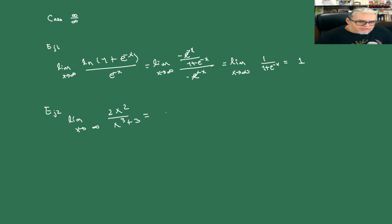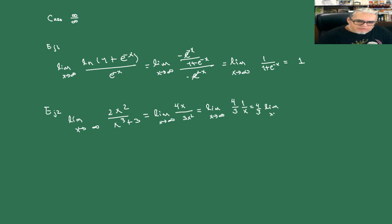Tratemos de usar L'Hôpital-Bernoulli. Esto es el límite de 4x sobre 3x cuadrada, que es el límite cuando x tiende a infinito de 4 tercios por 1 sobre x, que es 4 tercios del límite cuando x tiende a infinito de 1 sobre x, que es 0.